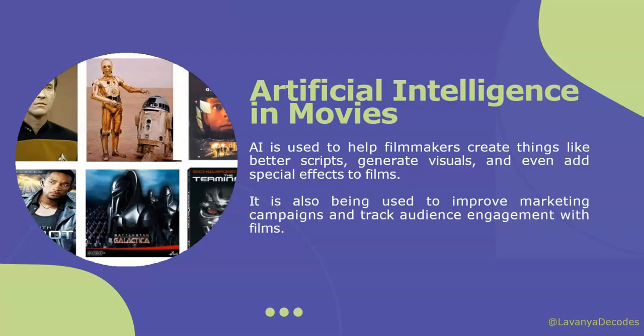First is artificial intelligence in movies. We currently have many AI-based applications in our daily life with entertainment services such as Netflix and Amazon. With the help of machine learning and AI algorithms, these services show recommendations for programs and shows. In filmmaking, AI is used to create better scripts, generate visuals, and even add special effects to films. It is also being used to improve marketing campaigns and track audience engagement. Examples of movies based on artificial intelligence include Terminator, Interstellar, and Robots.